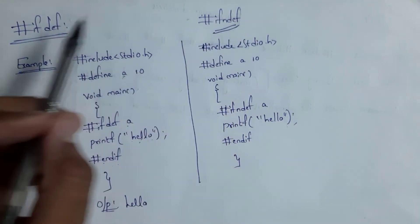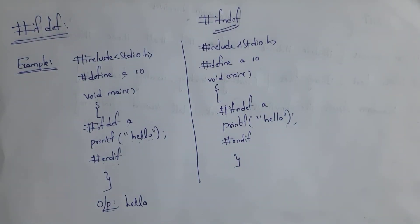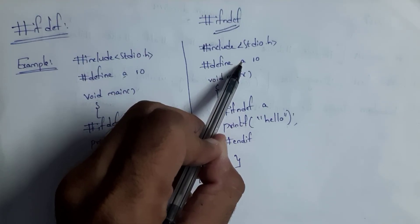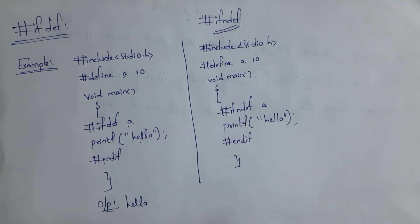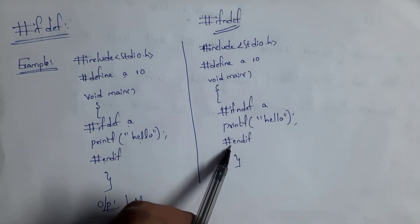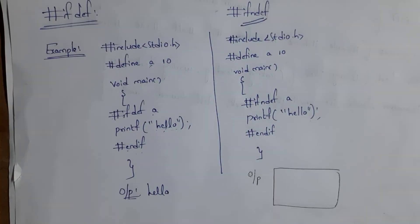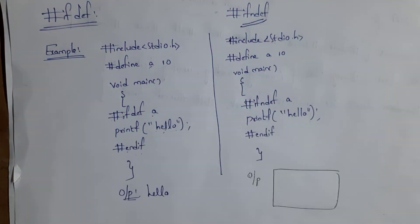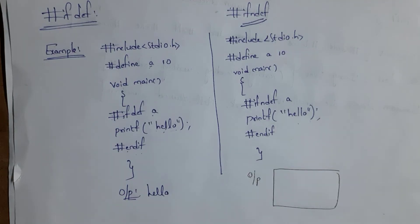The next example is for the #ifndef directive, which means "if not defined". The previous program used #ifdef; this one uses #ifndef. After #define A 10, inside void main I write #ifndef A — meaning: if macro A is NOT defined, print "hello", then close with #endif. Since I already defined A, the condition is false and I get no output.